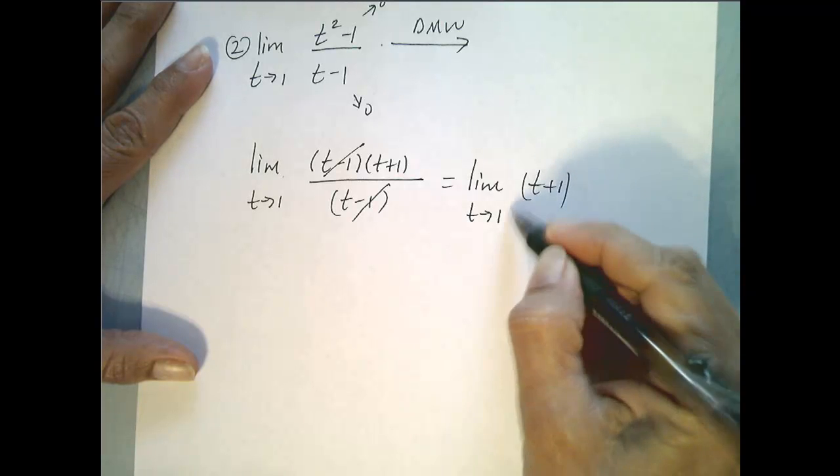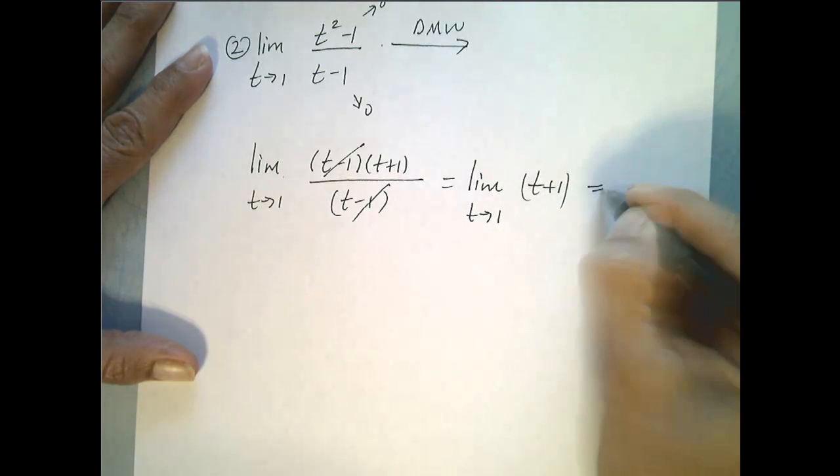Now we can do direct substitution. We plug in 1 for t and we get 2. So this limit right here is equal to 2.